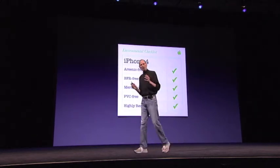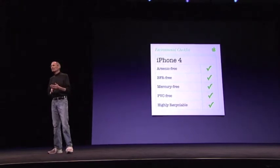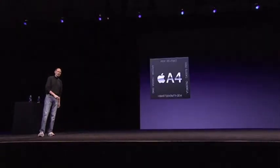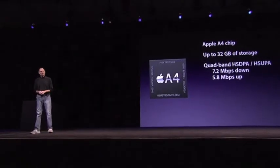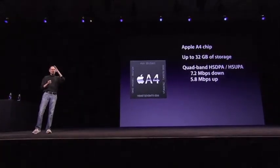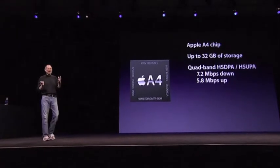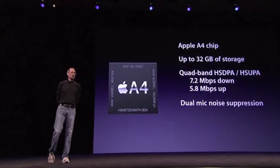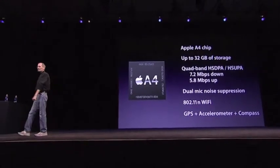Also, our environmental report card is strong: arsenic-free, BFR-free, mercury-free, PVC-free, and stainless steel and glass are highly recyclable materials. The A4 chip, up to 32 gigabytes of storage, quad-band HSDPA and HSUPA for 7.2 megabits per second down and 5.8 megabits per second up — that's theoretical because carriers don't support that yet, but as they do we'll welcome it — dual mics for noise cancellation, 802.11n Wi-Fi, and GPS plus accelerometer plus compass. We've got some great hardware in the iPhone 4 with the A4 chip.